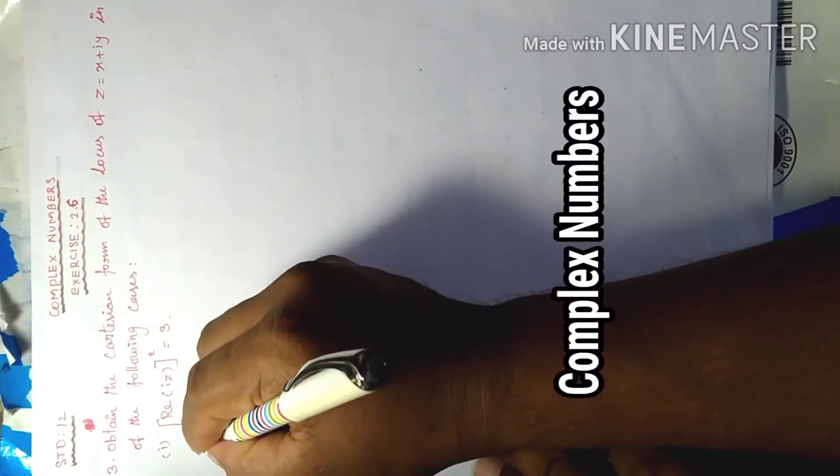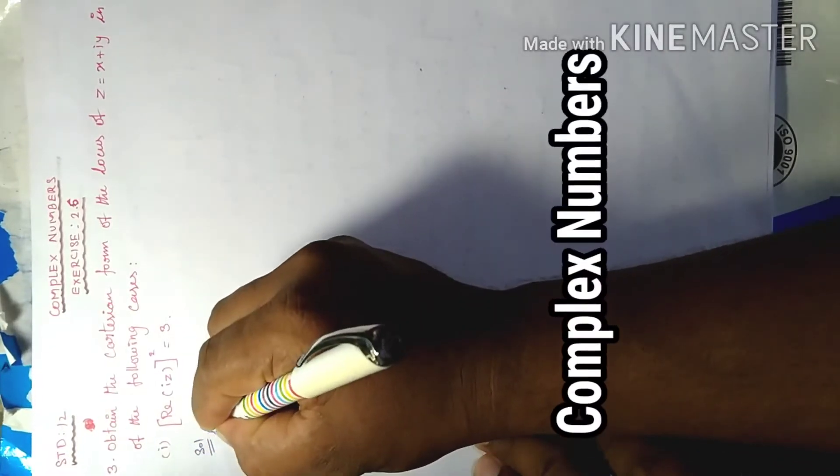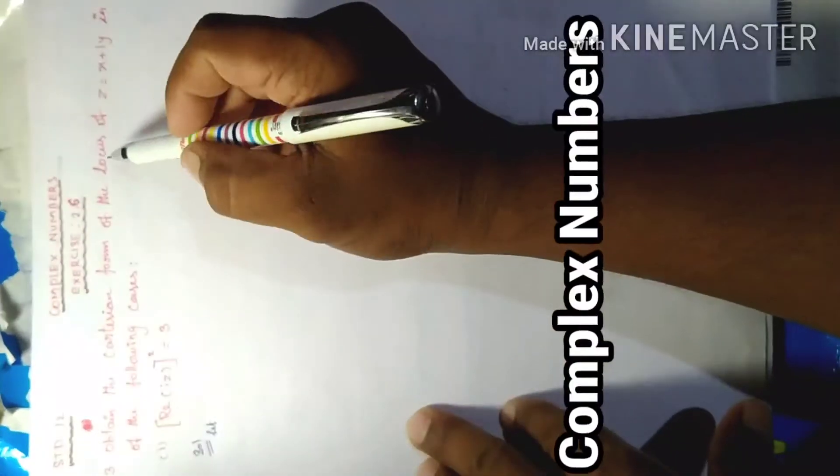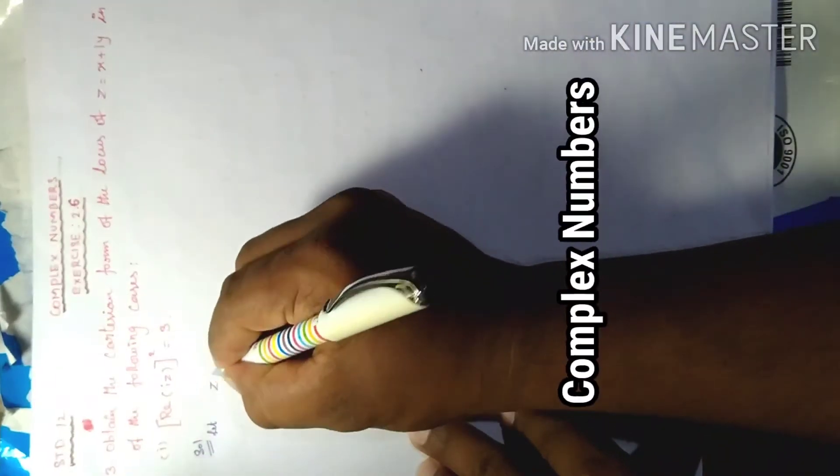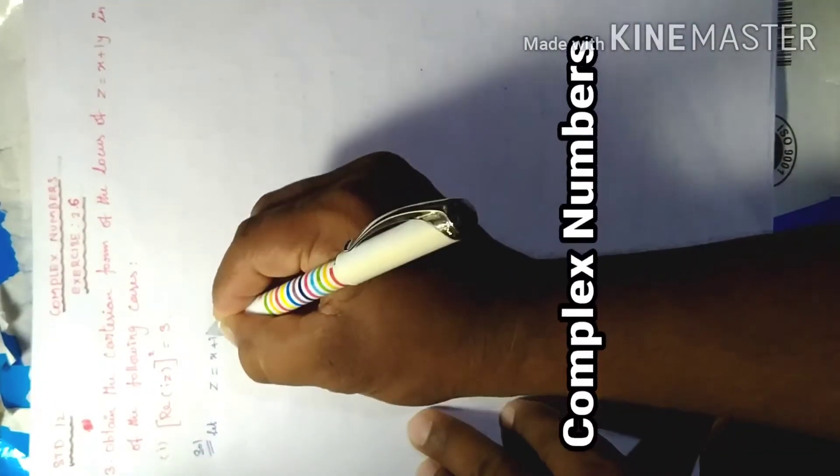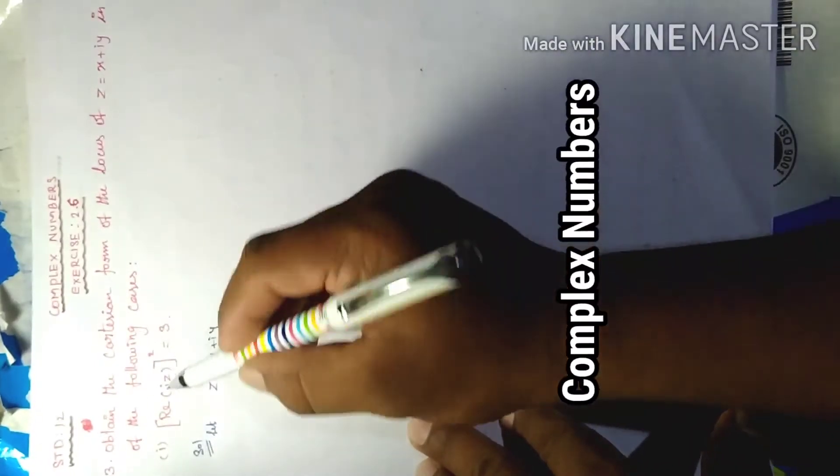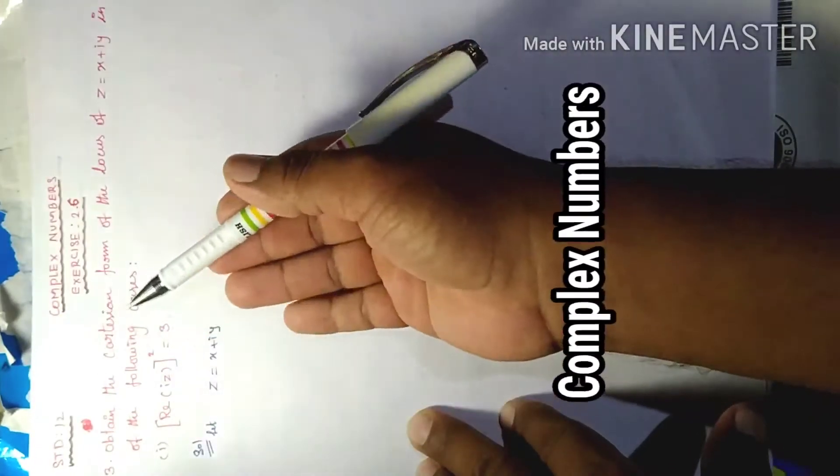First one. Solutions. Let the locus of point z equal x plus iy. We'll apply the z value to solve. The answer is Cartesian equation.